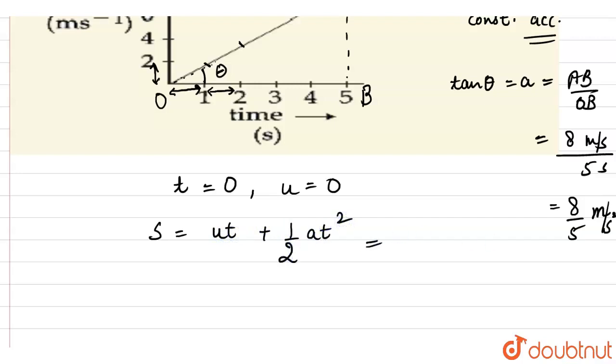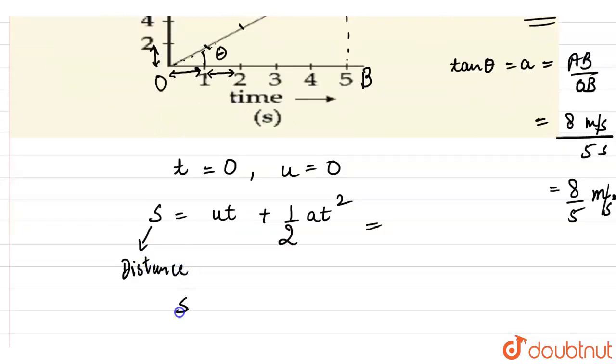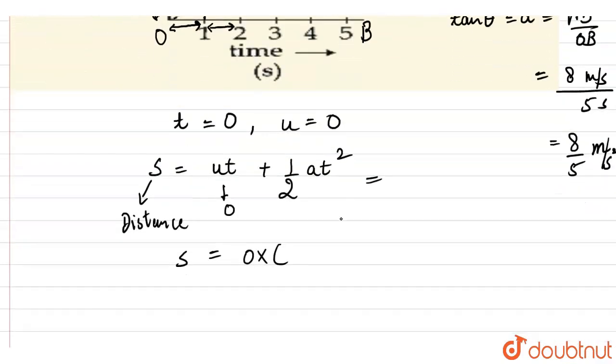So here we can calculate the value of s which is distance. So the distance is equal to, the initial velocity is 0, so 0 into time. The time interval for which we have to calculate is from t equals 0 to t equals 5 seconds. So this time interval would be 5 plus half into acceleration we just calculated.